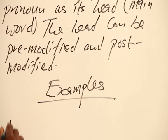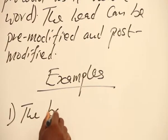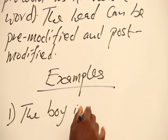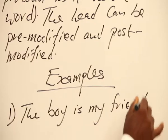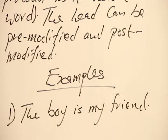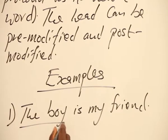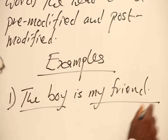Example number one: The boy is my friend. This sentence has two noun phrases. Actually, we have the boy, we have my friend.